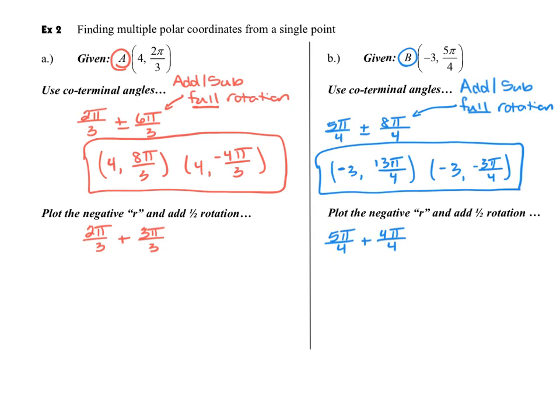Now this second method for finding an equivalent point is different. What we're going to do is we're going to change the sign on the R value. And then we're only going to add half of the rotation.